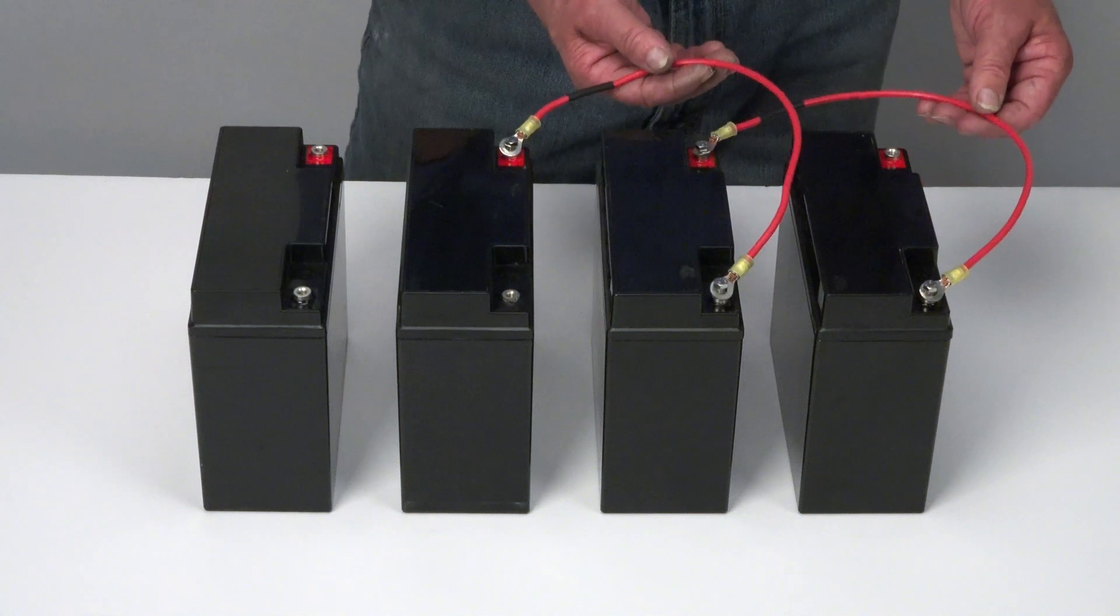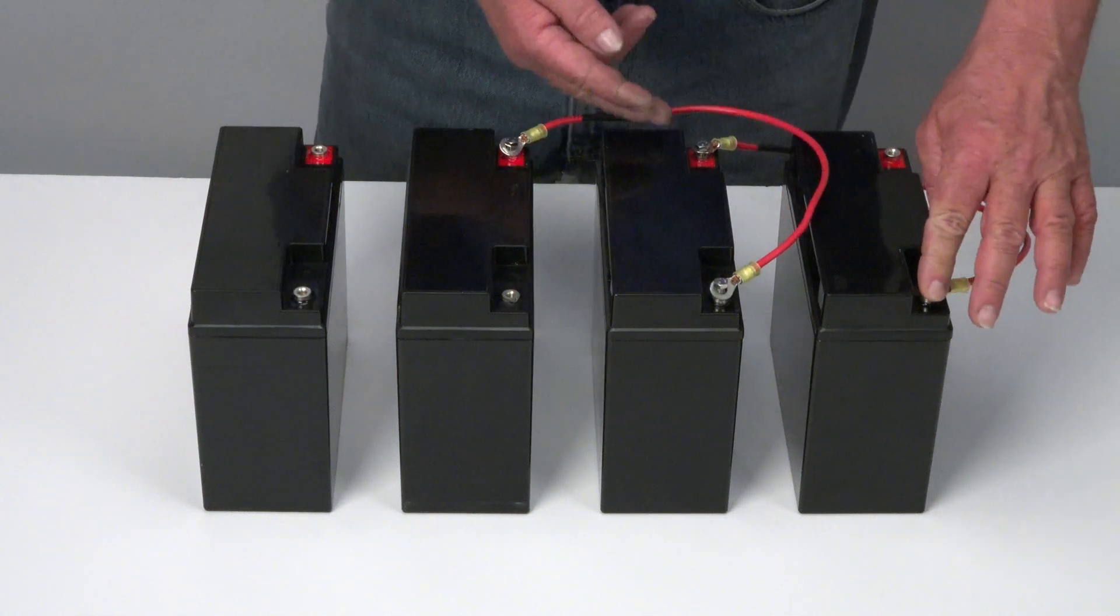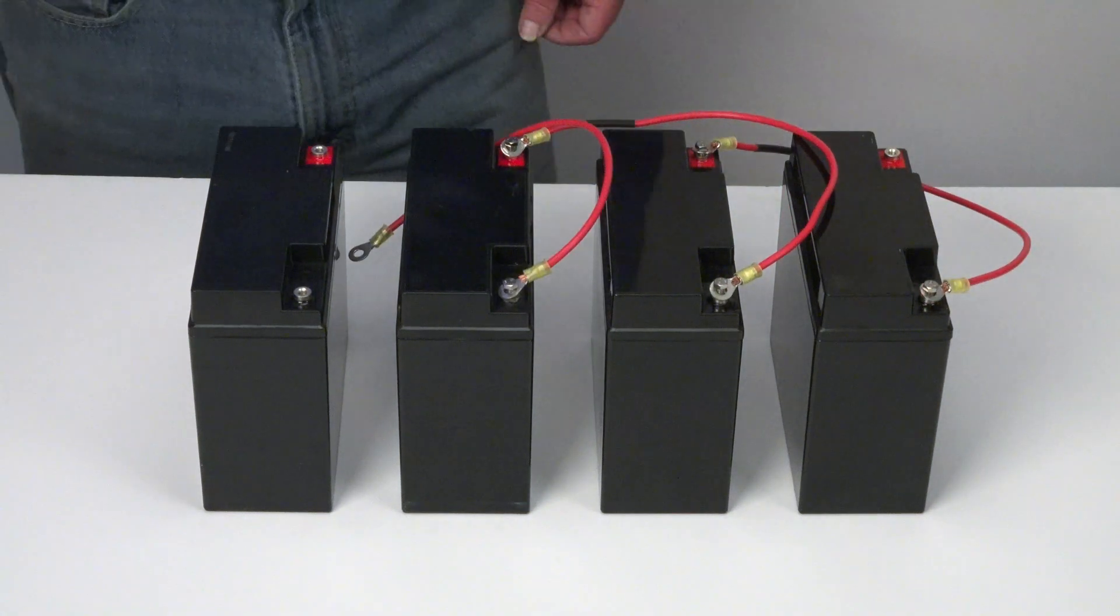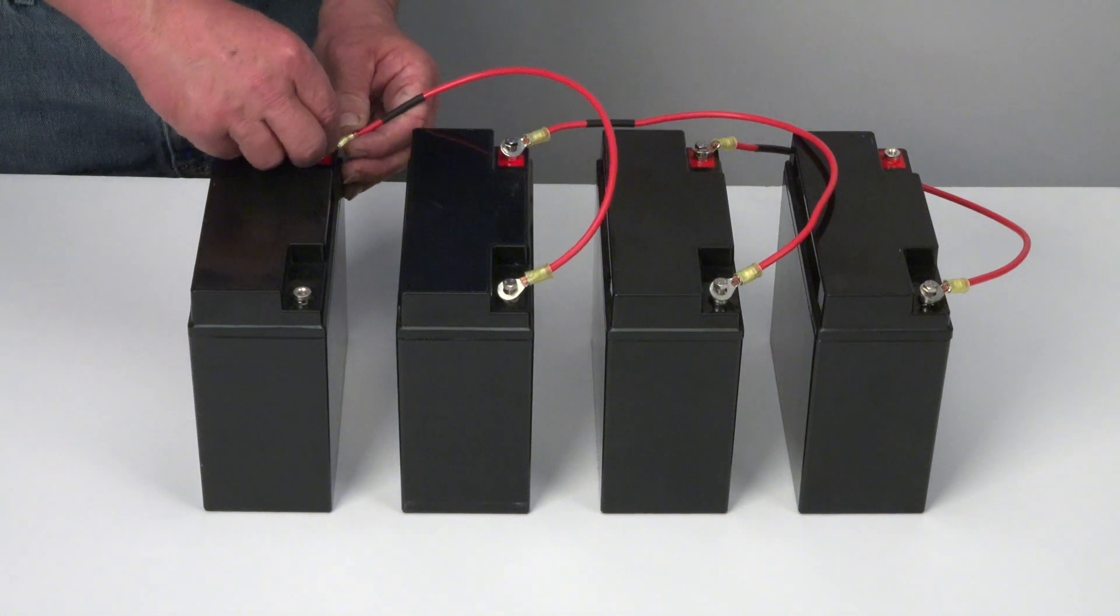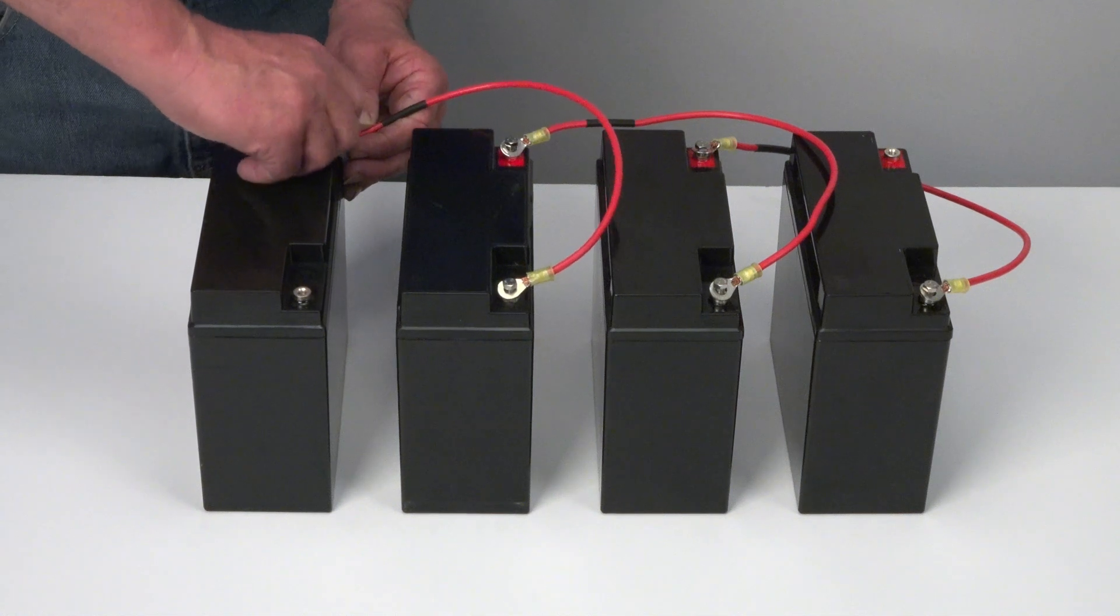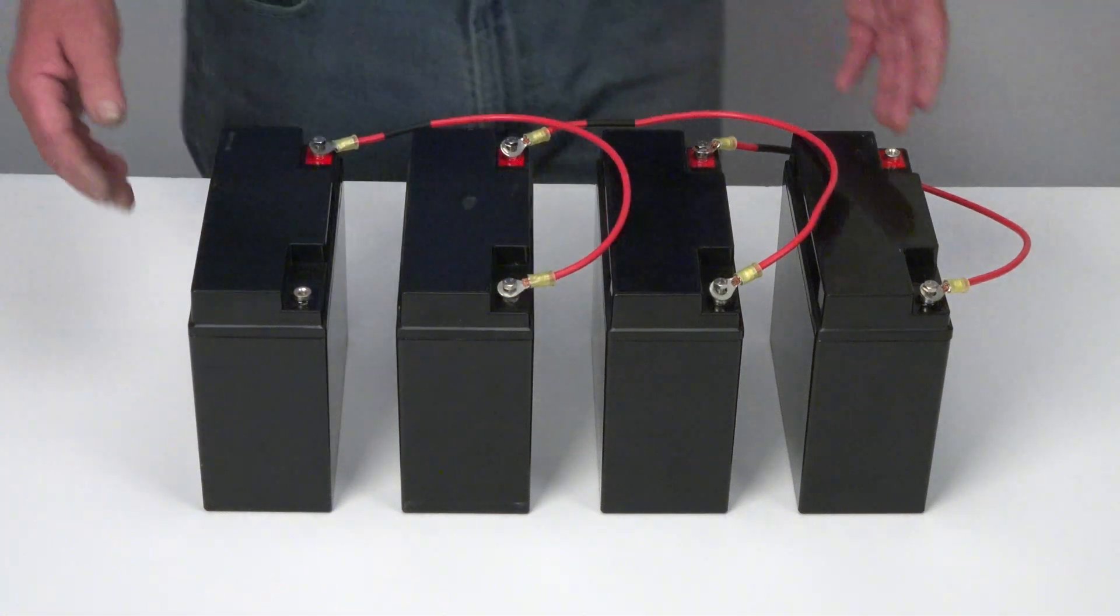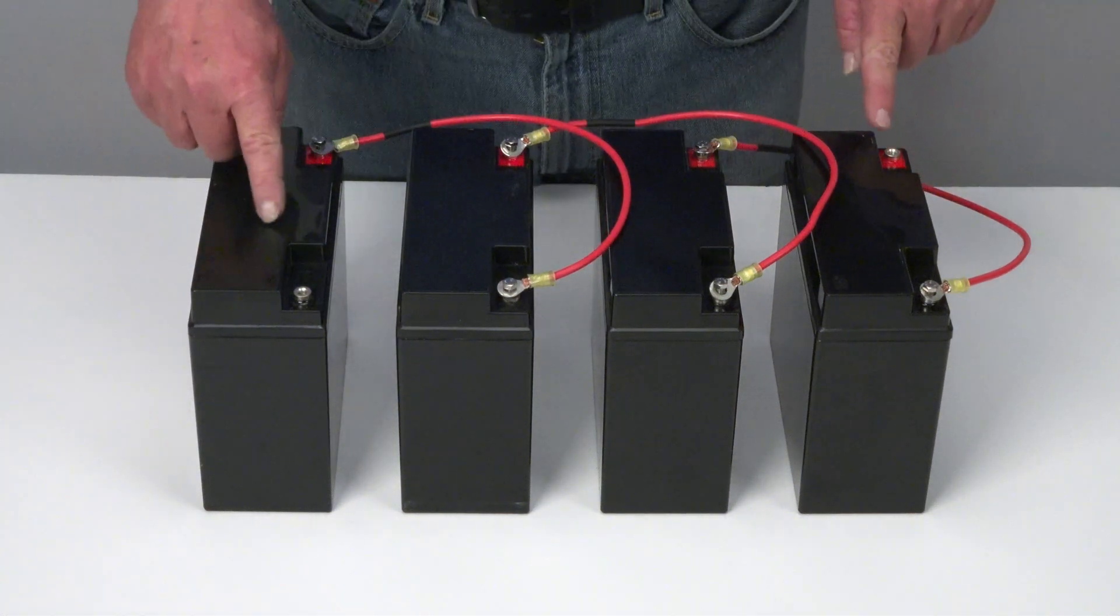So again, series connection goes between the positive and negative. Continuing the process, I connect the negative terminal of number three to positive terminal number four. It should make a 48 volt battery pack between these terminals.